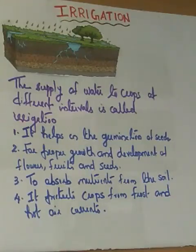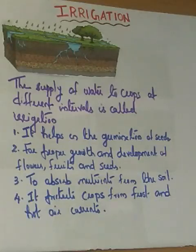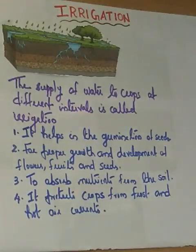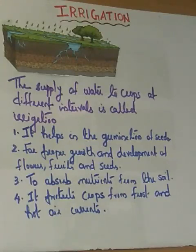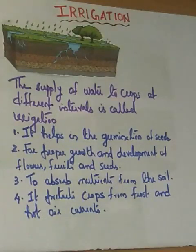We have to regularly water the plants to maintain healthy crop growth; fields have to be watered regularly. So irrigation is very important. The supply of water to the crops is called irrigation. Time and frequency depends upon the type of crop, type of soil, and the season. In summer the frequency of watering is higher because of the increased rate of evaporation from the soil and from the leaves through transpiration. Water is needed for germination of seeds, for proper growth and development of flowers, fruits and seeds, to absorb nutrients dissolved in water from the soil, and to protect crops from frost and hot air currents.